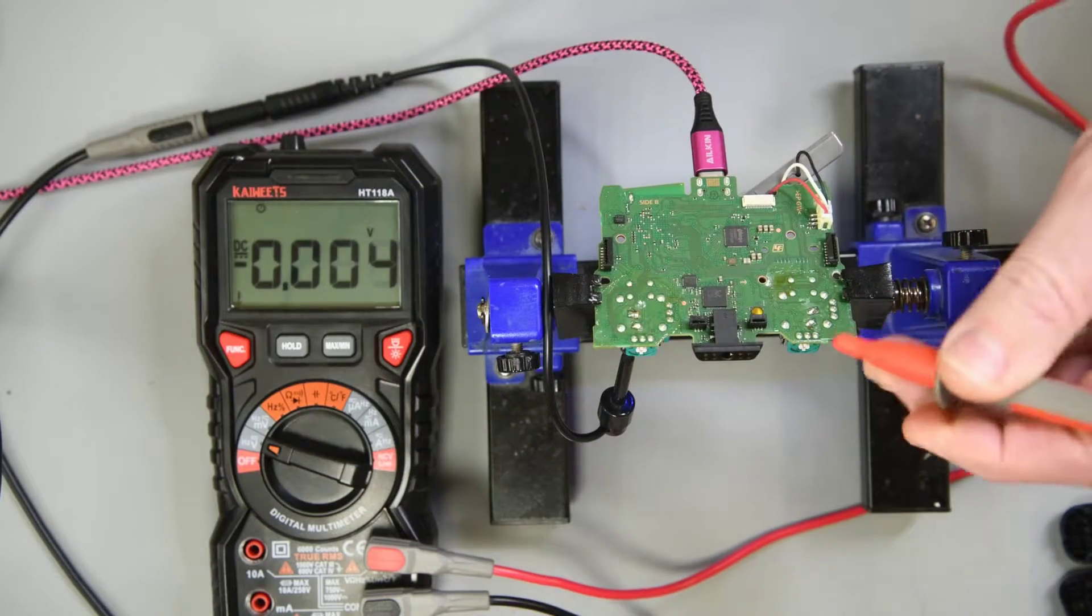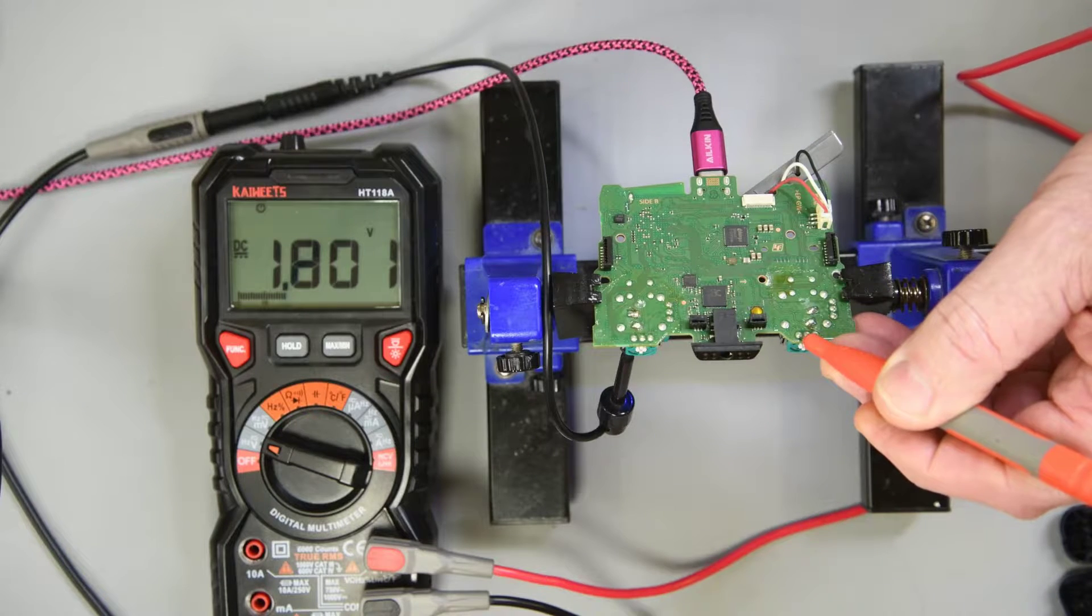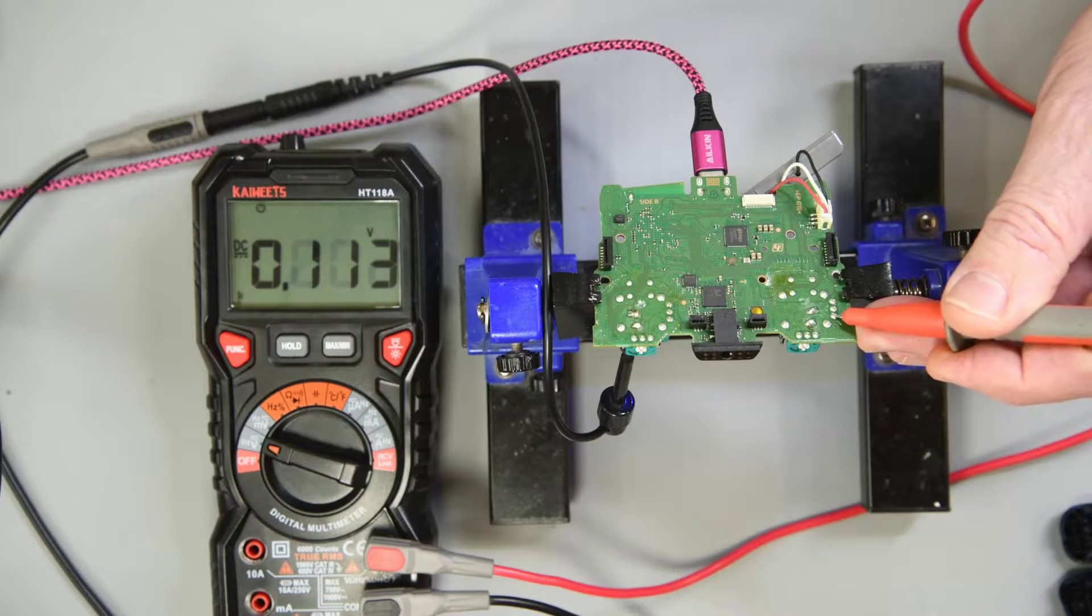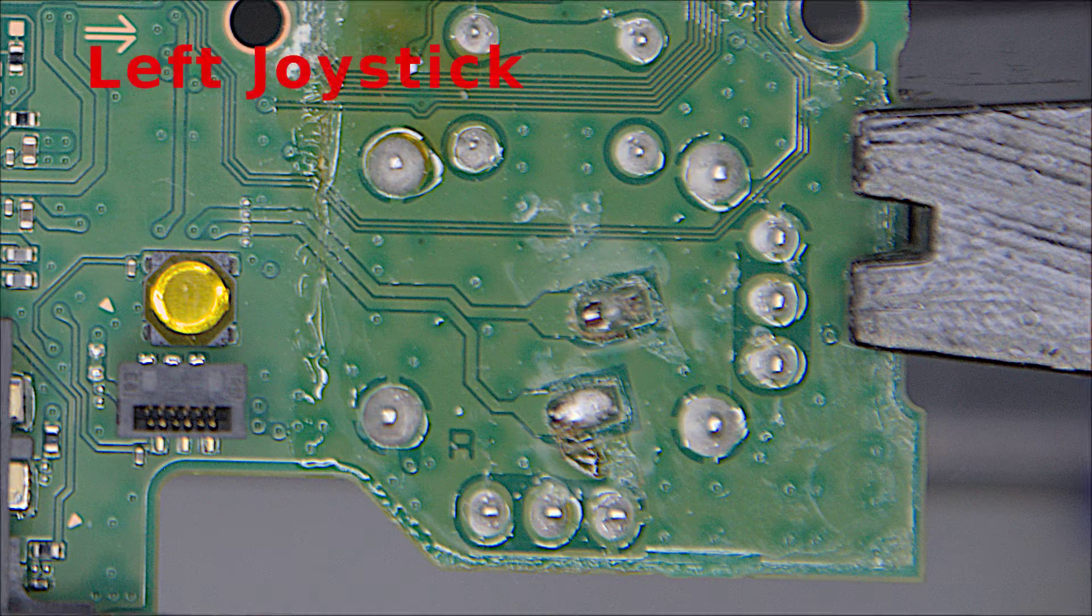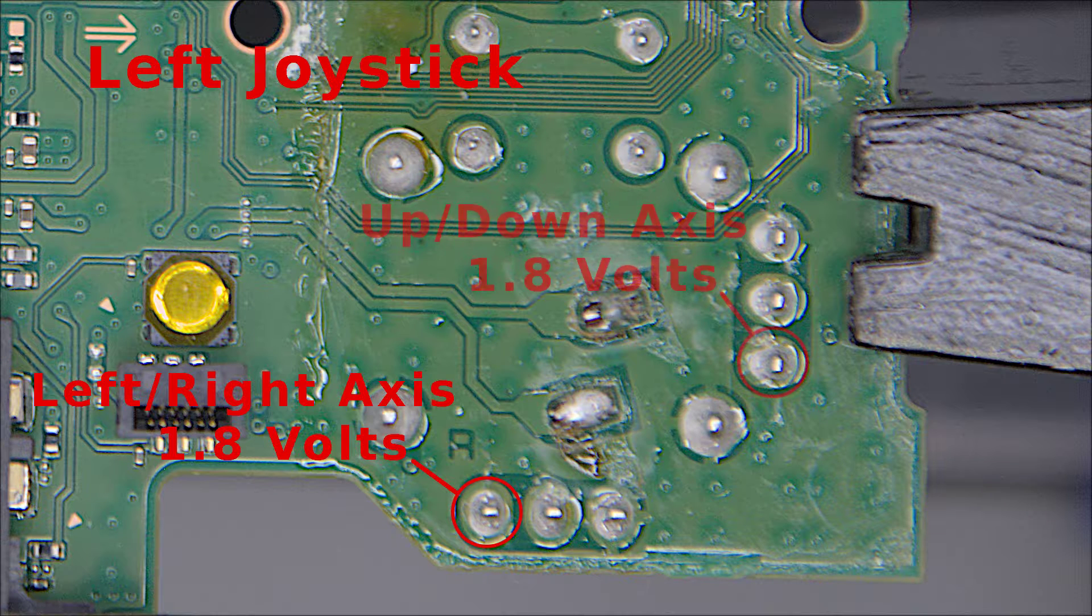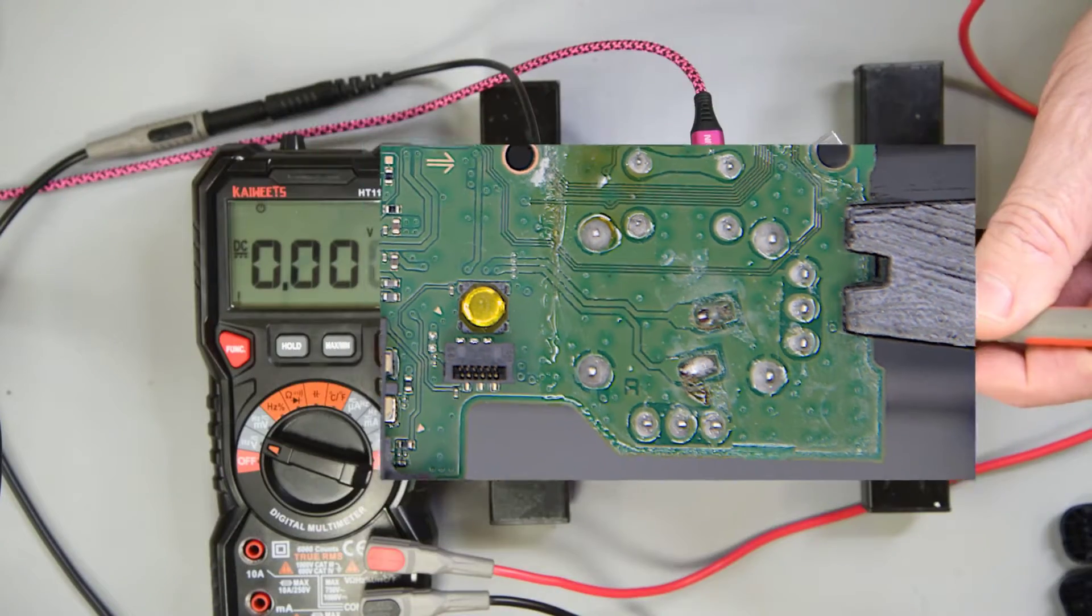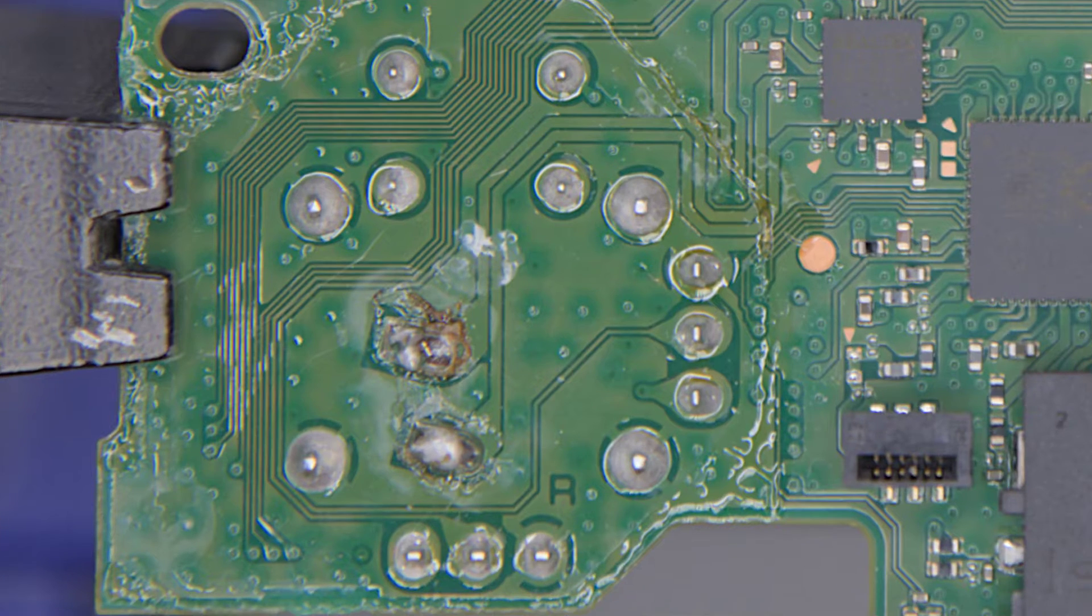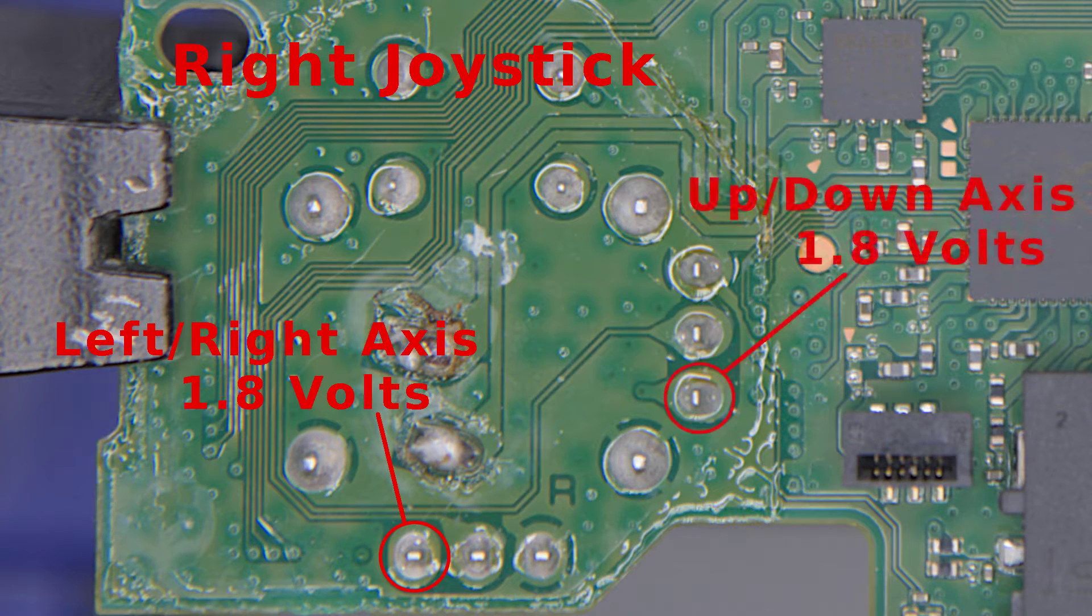The voltage supply for the left right potentiometer is this pin here and it should be close to 1.8 volts. The supply for the up down potentiometer is this pin and it should read the same 1.8 volts. These two pins are connected together by a trace on the PC board. Where those traces are will depend on the version of the controller. If the other joystick is working and either or both of the 1.8 volts is missing, then there is going to be damage to a trace going to these pins.